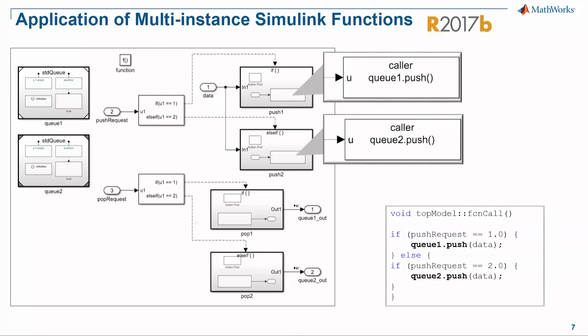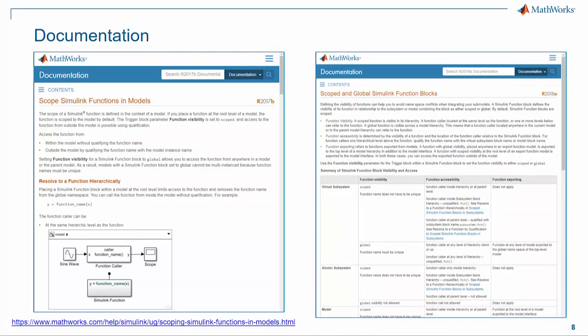This is a purely modeling semantic which also applies to C code — it's not just a C++ modeling style. There is documentation in 17B that describes the new scoping functionality available with models. And in 18A, there's a concise tabular format that describes the different encapsulation available within Simulink and how that affects the visibility and accessibility of those functions.